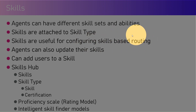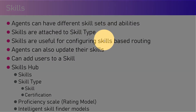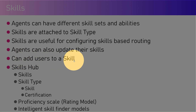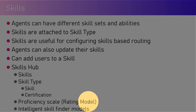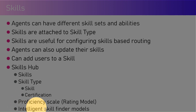Skills are useful for configuring skills-based routing. The routing engine will identify agents belonging to specific skills and, based on the proficiency scale, will route work items according to the configuration or algorithm set in the backend. Agents can also update their skills, and we can add users directly to a skill. The Skills Hub contains skills, skill type, proficiency scale, and an intelligent skill finder model, which is an AI model that helps identify skills based on a predefined model set in the backend.